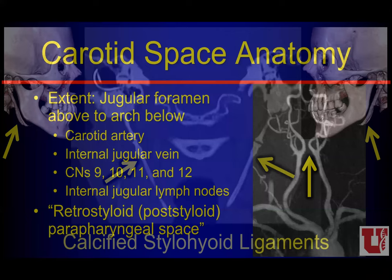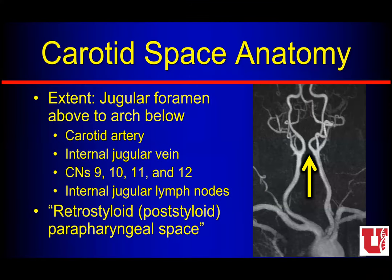The carotid space has an extent superiorly and inferiorly through both the suprahyoid and the infrahyoid neck. The styloid process kind of separates the parapharyngeal fat from the carotid sheath or space — that's why some people use the nomenclature 'post-styloid' or 'retro-styloid parapharyngeal space' for this area. Whichever words you're using for your surgeons are great, as long as your referring clinicians understand what those words are. The carotid sheath or space extends from the jugular foramen all the way down to the aortic arch.